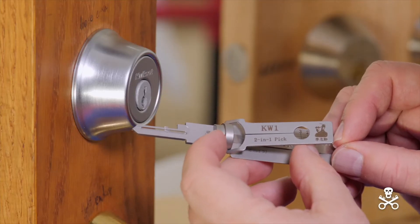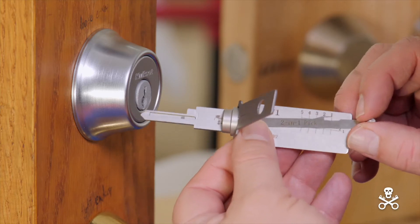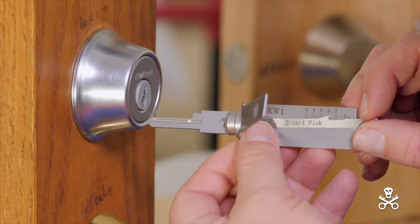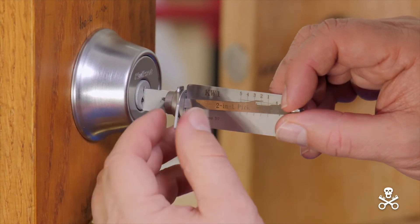Here's the Li Shi KW1 2-in-1 pick for 5-pin quick sets. I pull the pick all the way back, gently insert it, and get right up to the shoulder.